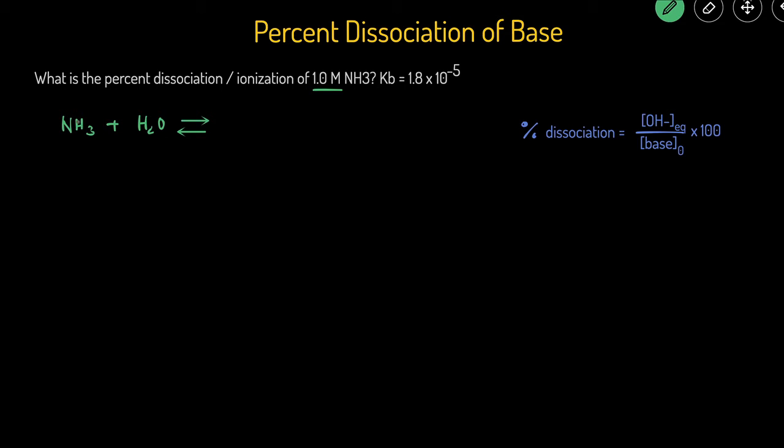Bases will accept protons. So that means that the H2O will give up the H plus to the NH3. So we're going to get NH4 plus and OH minus.